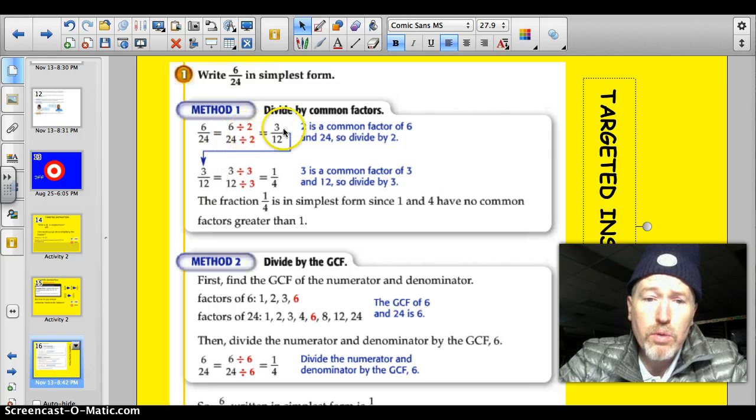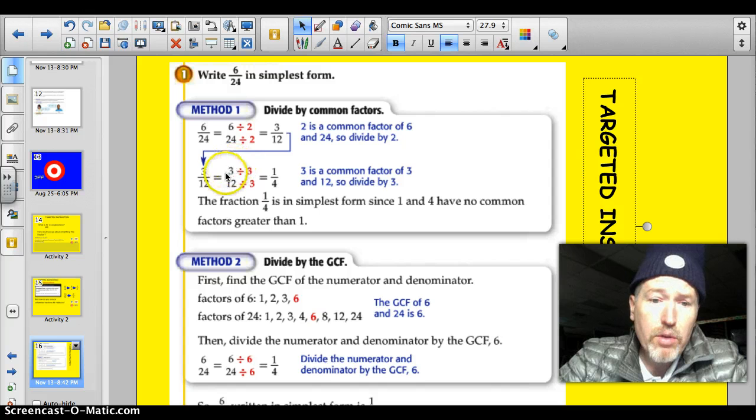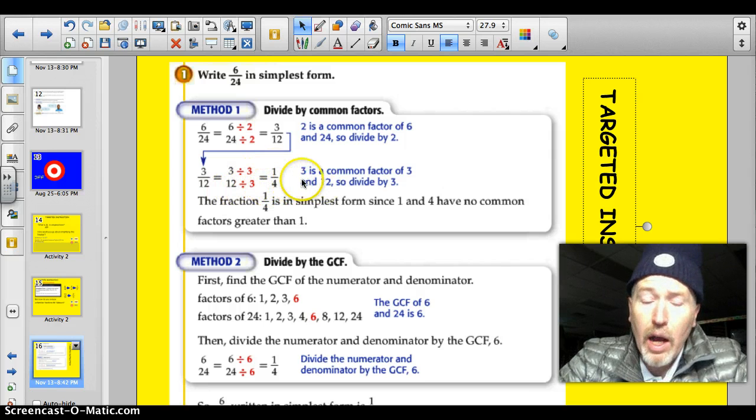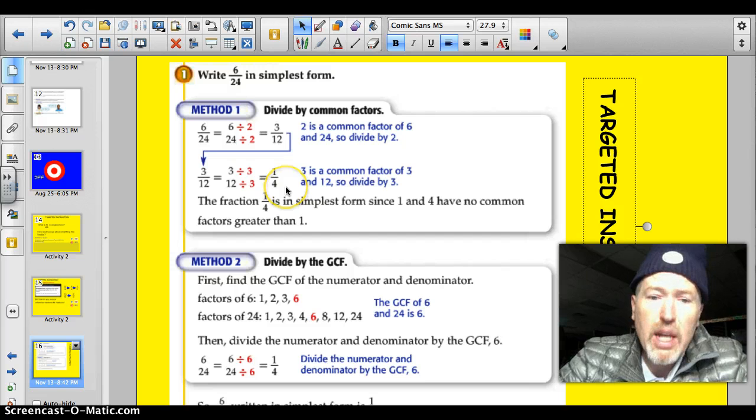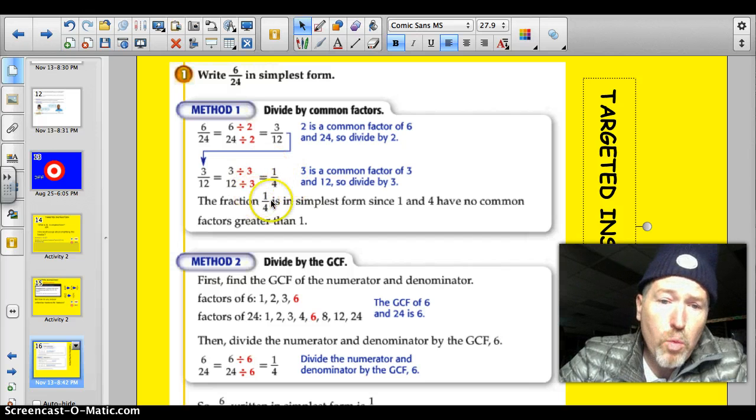So, they just started dividing by 2. And I do this a lot of times, too. They just did 6 divided by 2 was 3. 24 divided by 2 is 12. But they still weren't in simplest form yet. So, then they reduced, again, by dividing by 3, the numerator and the denominator. 3 divided by 3 was 1. 12 divided by 3 was 4. It didn't take long, but it took two steps to get to that simplest form, which is 1/4 here.